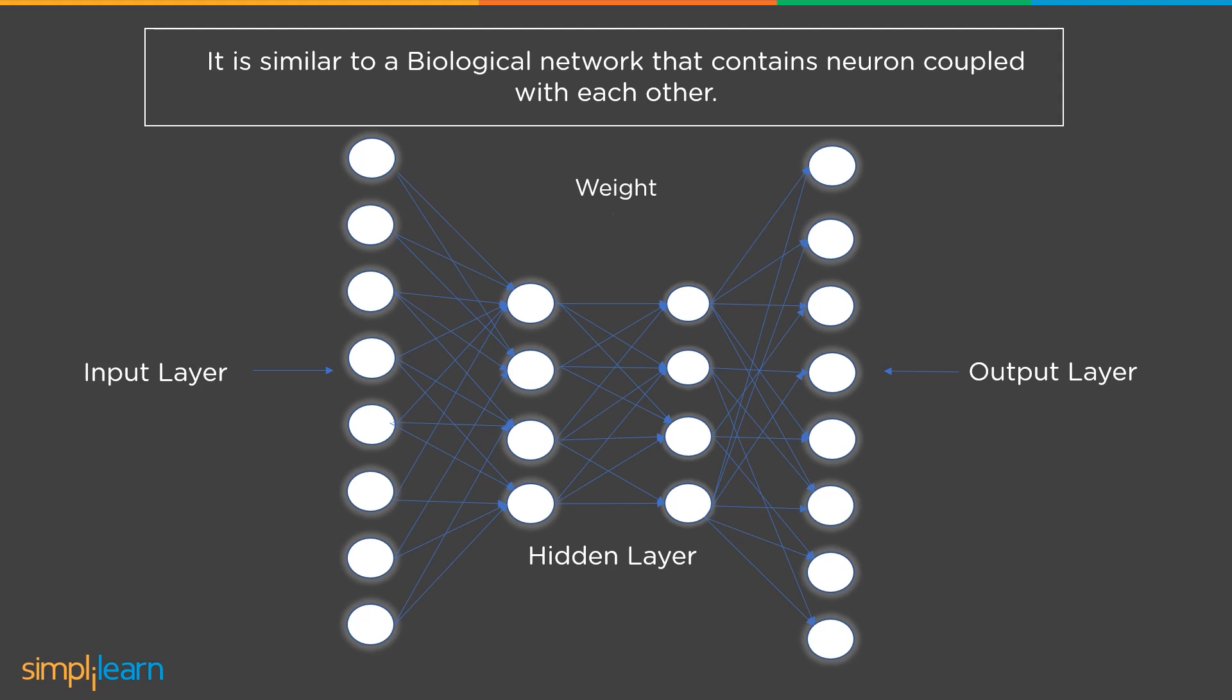This kind of network is based on biological neural networks, which contain neurons coupled to one another across different network levels. In this instance, neurons are shown as nodes.